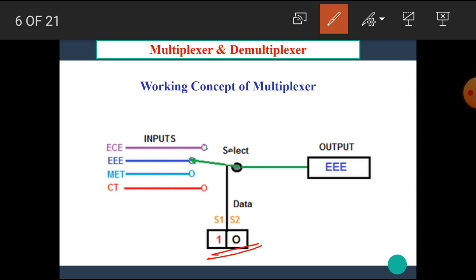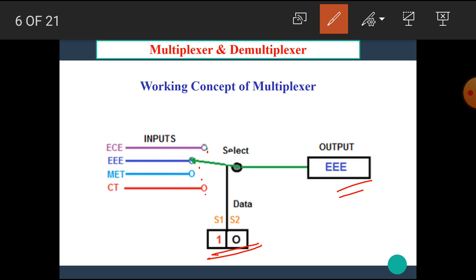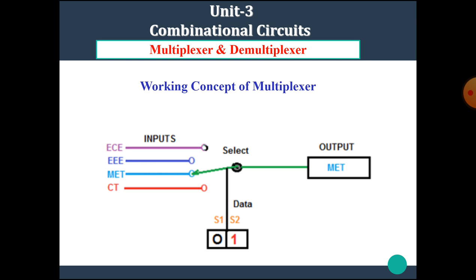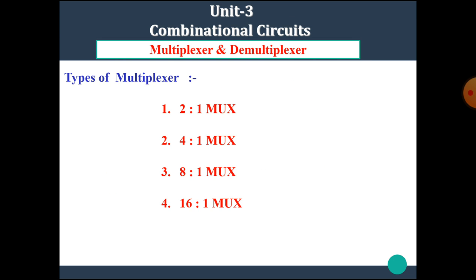For each combination of select input lines, each input is selected to the output. That means ECE, EEE, MET, and CT are each selected depending upon the combination. This is the basic idea of the multiplexer.